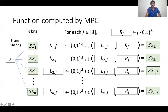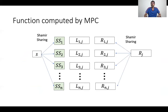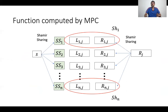For each party i, we choose a uniform string Lij from the set of lambda-bit strings such that the inner product of Lij with Rj equals the j-th bit of the Shamir share of party i. So for the first party, we choose a random string L1j such that the inner product of L1j with Rj is the j-th bit of the first Shamir share. Similarly for the second party, we choose L2j such that the inner product of L2j with Rj is the j-th bit of the second Shamir share, and so on. Once we choose all these Lij, we take this Rj for each j and secret share it using Shamir secret sharing to generate n shares Rij. The share of party i is the set of all Lij and Rij for each j in 1 to lambda.